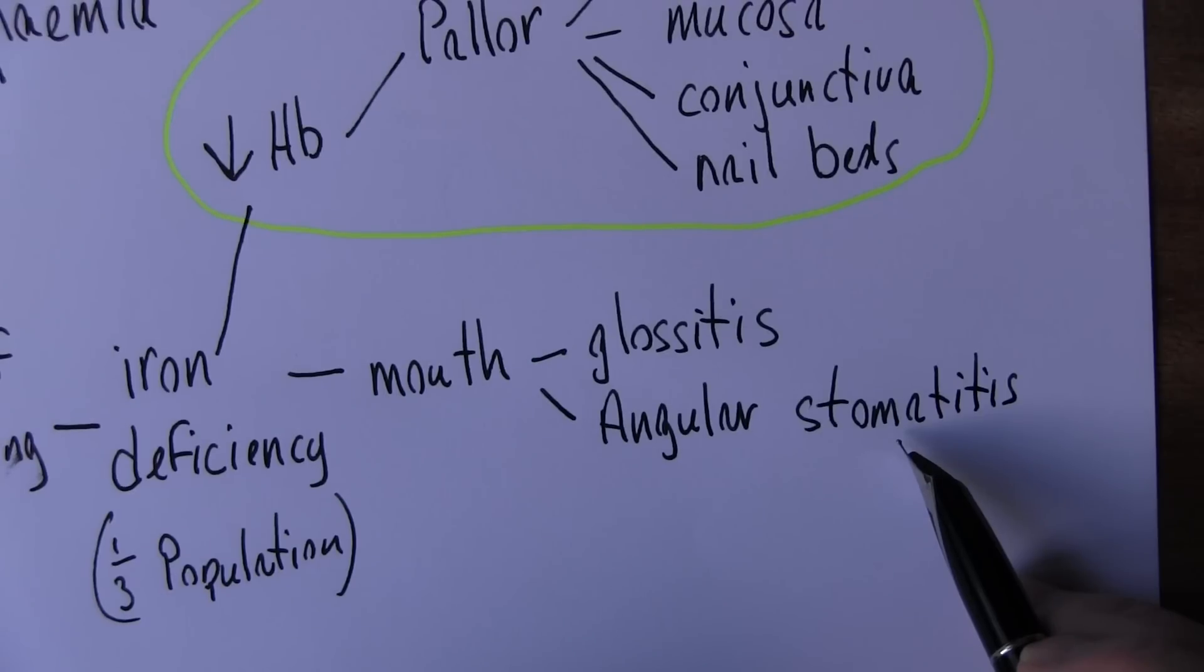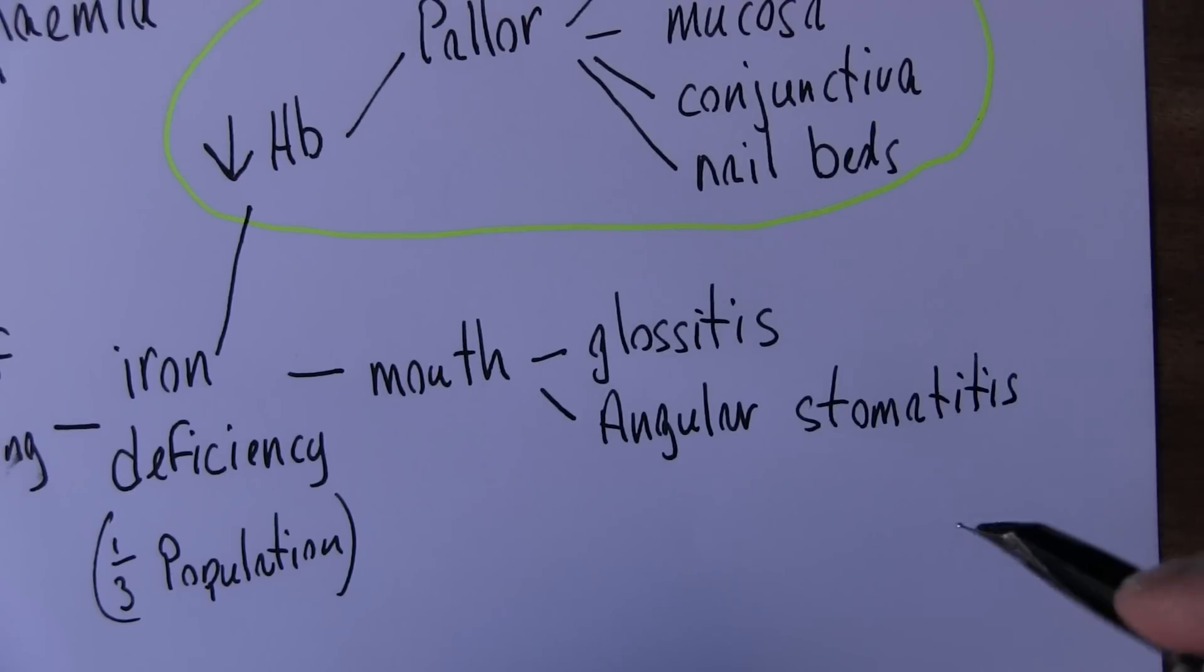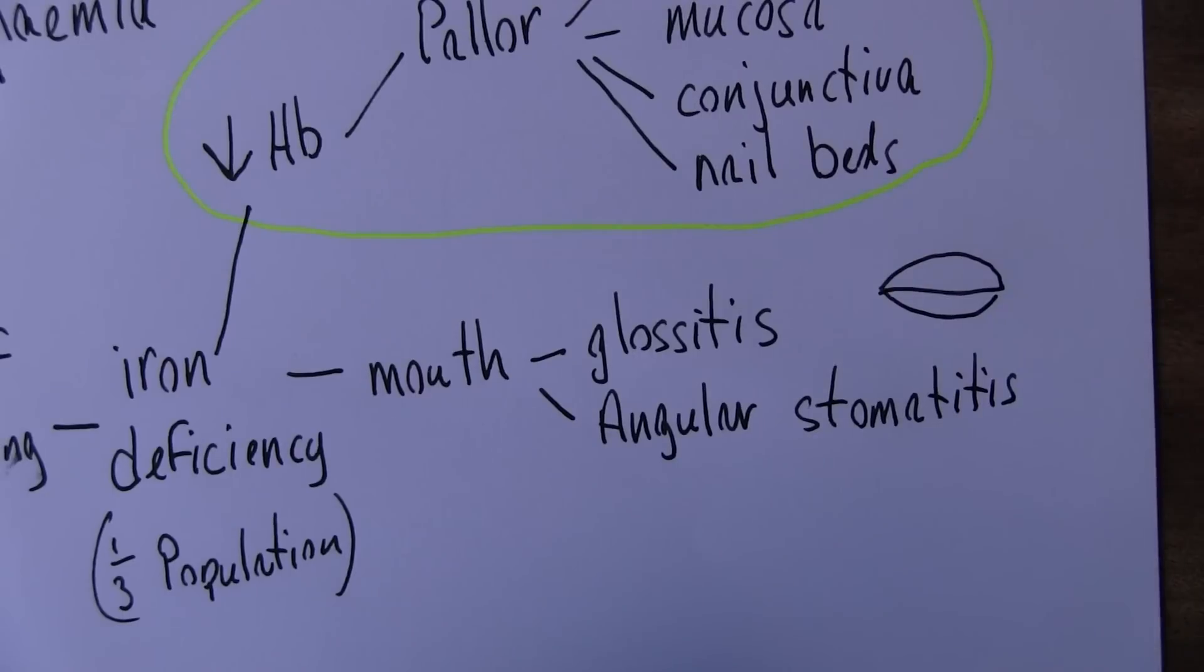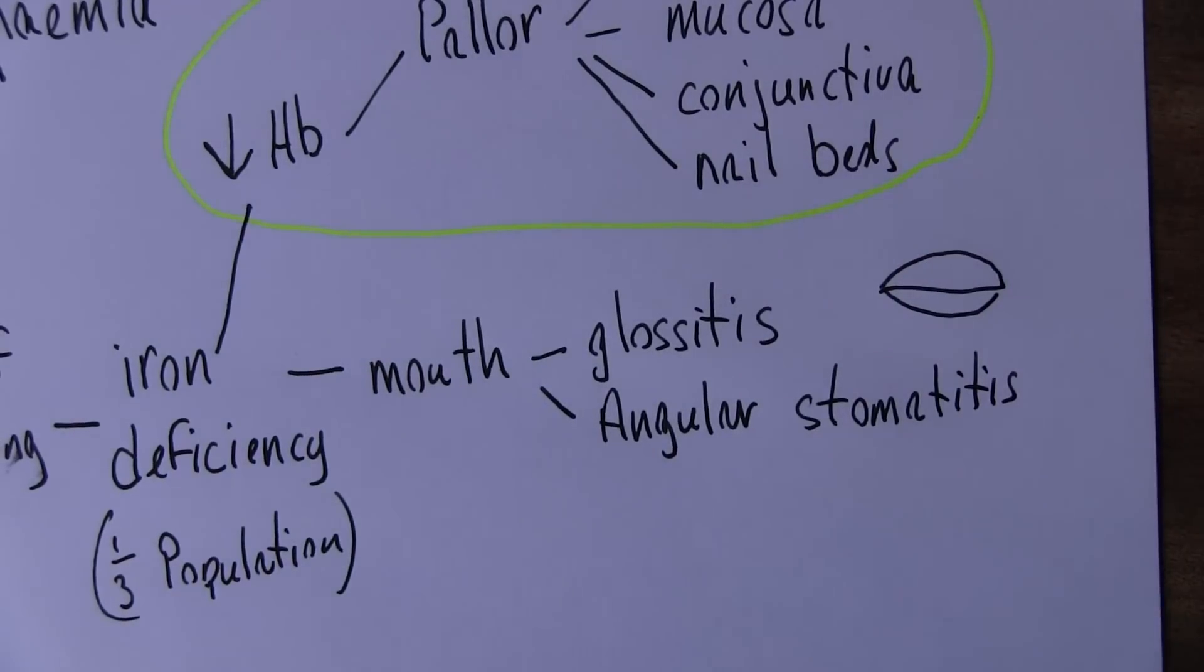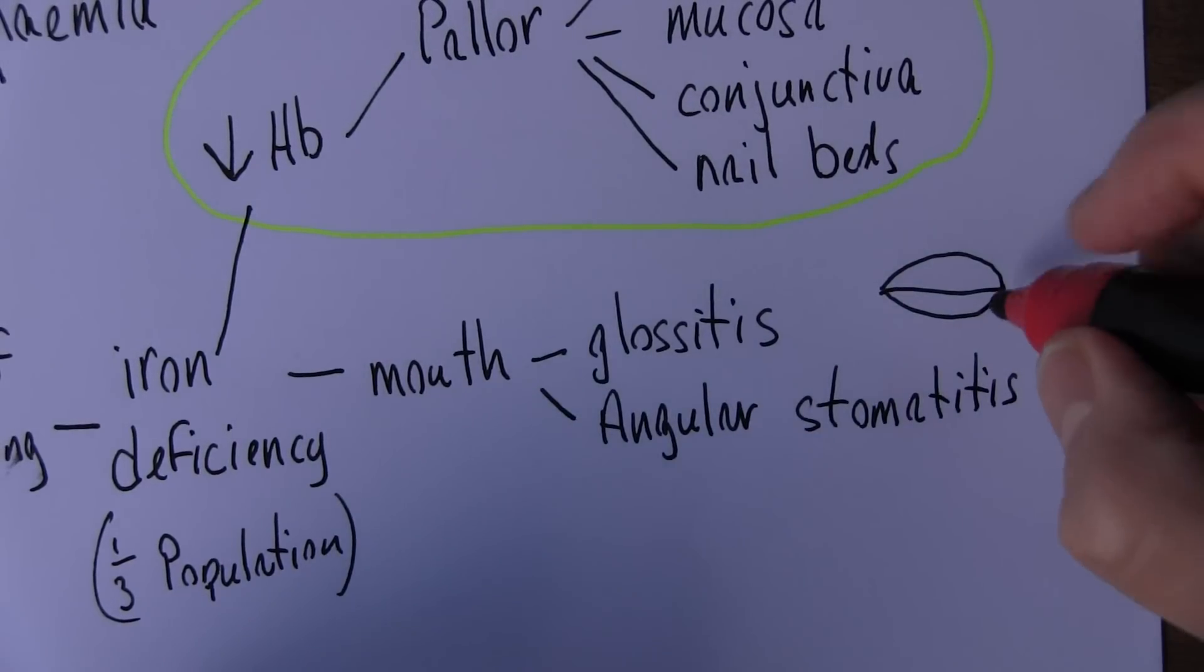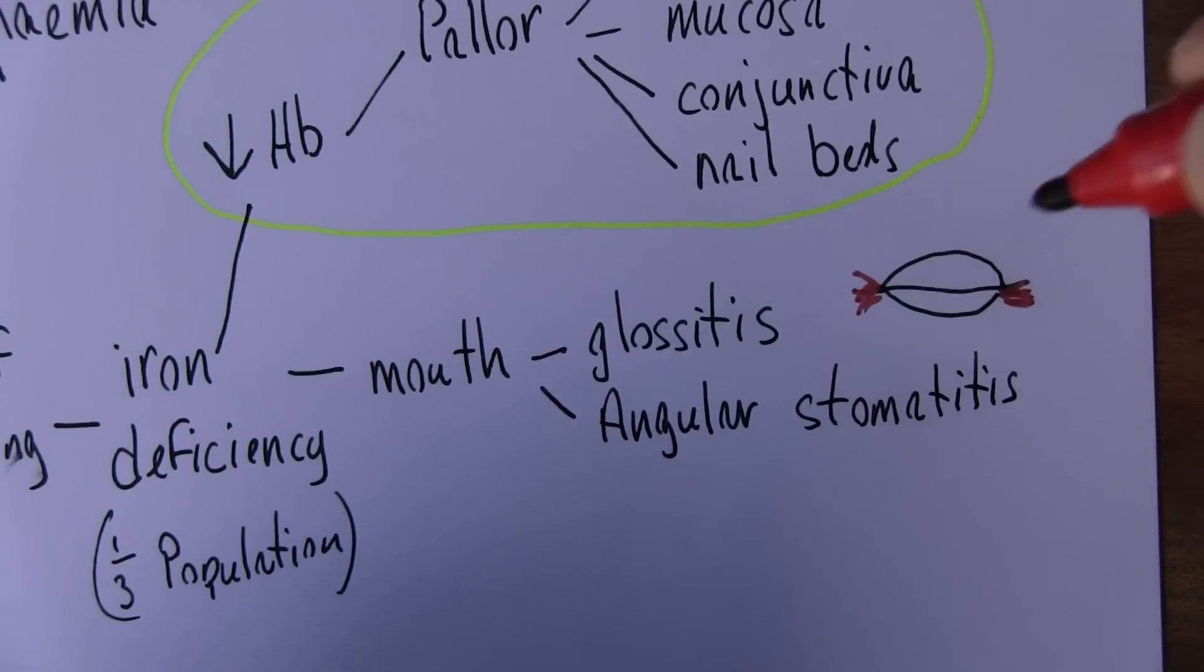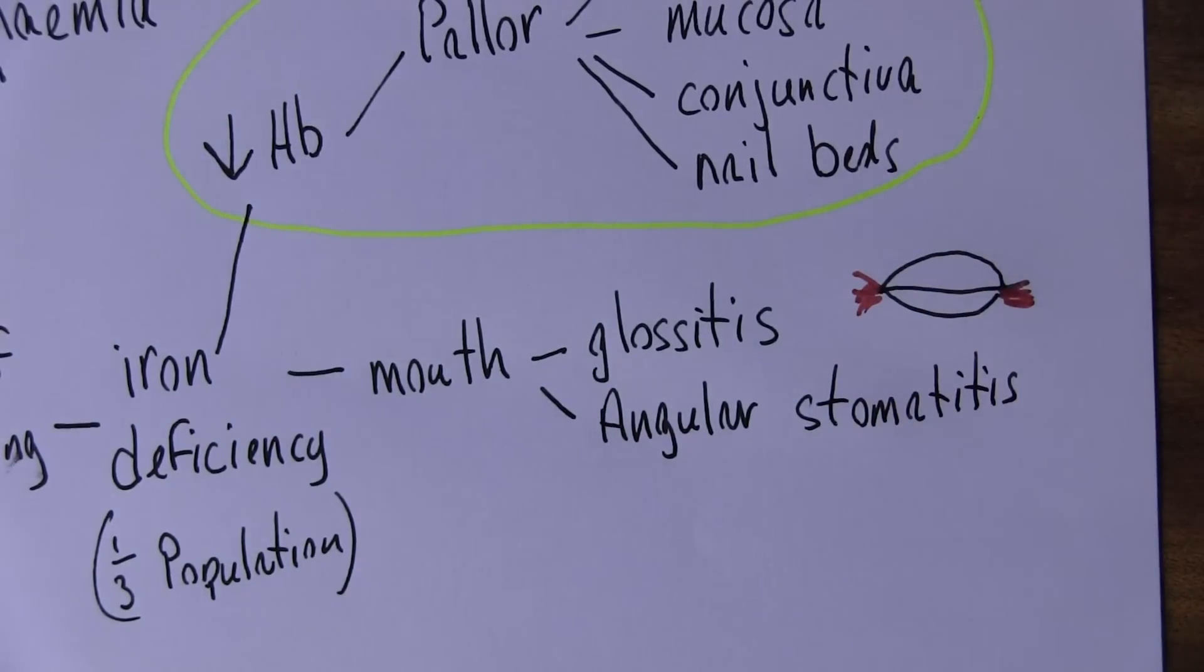Now itis means inflammation of. Stoma actually relates to opening. Of course the mouth is an opening. And what you see particularly if this is the mouth here, these are the lips, what you see particularly is inflammation at the corner of the lips there like that. Angular stomatitis.